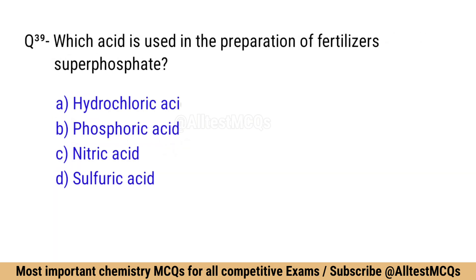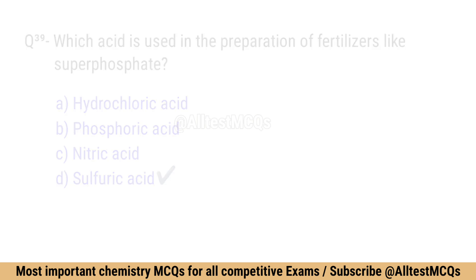Question number 39: Which acid is used in the preparation of fertilizers like superphosphate? Correct option is D: Sulphuric acid.